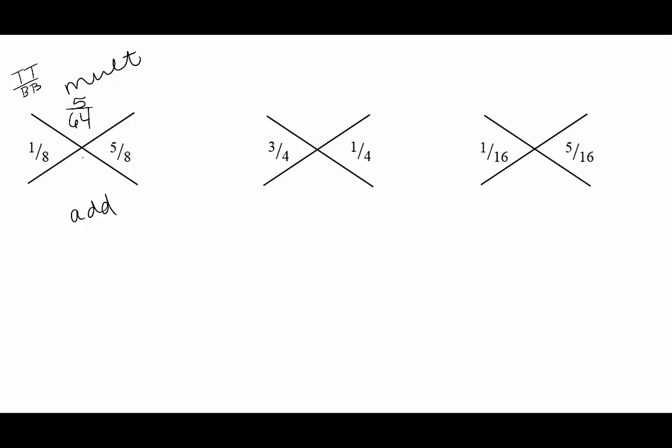So 1 times 5 is 5, 8 times 8 is 64. When you add fractions, you add the top and you keep the bottom. So we need to be careful. When you multiply, you multiply the bottoms, but when you add, you keep the bottom. And this, of course, reduces to 3/4.